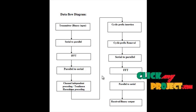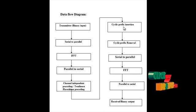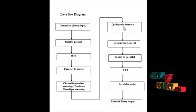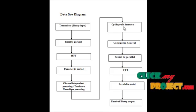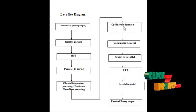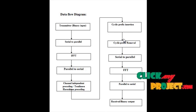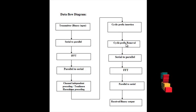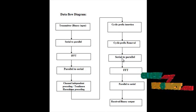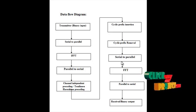The output is given to cyclic prefix insertion. The cyclic prefix means that if any modification occurs, the data will be inserted into the cyclic prefix. If the data has no changes, it can be removed. The output is then given into serial-to-parallel conversion, which is the opposite form of parallel-to-serial conversion.